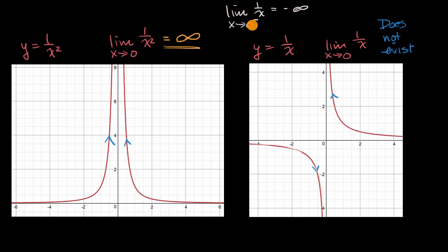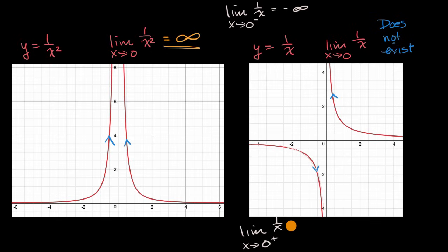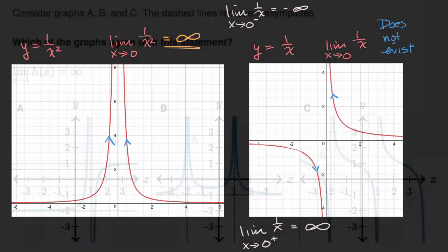And of course, the limit as x approaches zero from the right of one over x — here you're unbounded in the positive direction, so that's equal to positive infinity. Let's do an example problem from Khan Academy based on this idea and this notation.